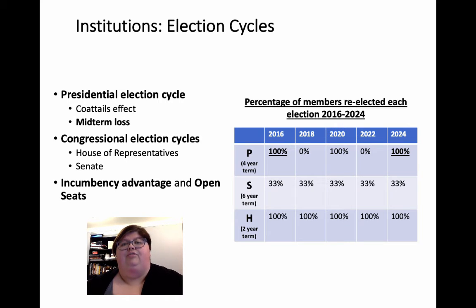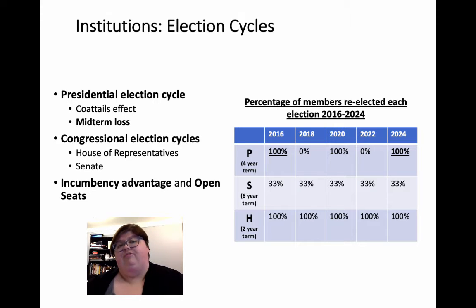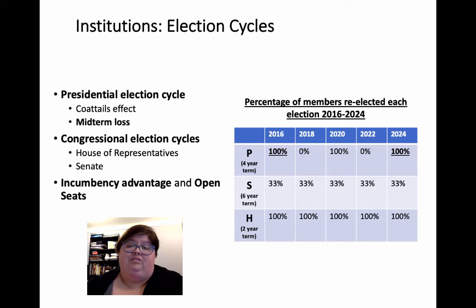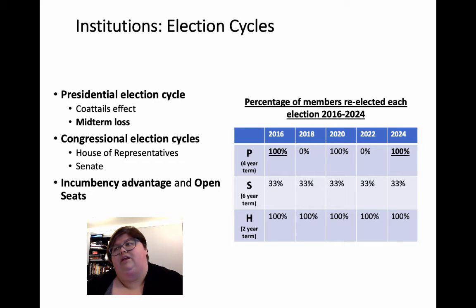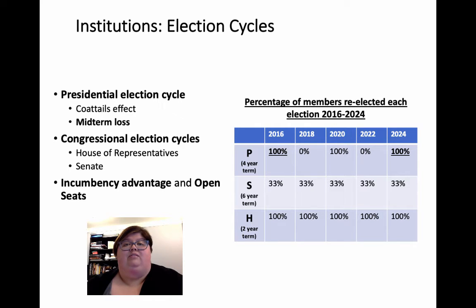Built into how elections work is the concept of election cycles. There are different cycles based on the federal positions involved. Presidents have a four-year term, so every four years we have a presidential election. There is something called the coattails effect: when a president comes into office, they quite often have a lot of support behind them, bringing members of their party into office with them. When Obama was elected in 2008, for example, the Democrats took back both the House and the Senate — that's the coattails effect.